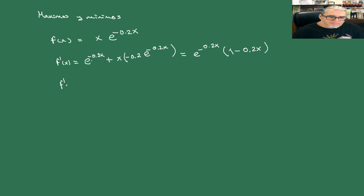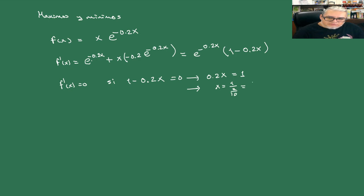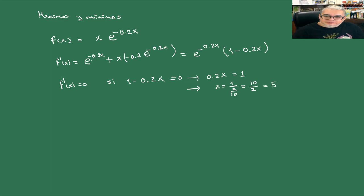f'(x) = 0 si 1 − 0.2x = 0, es decir que 0.2x = 1, o bien que x = 1 sobre 0.2, que es 10 sobre 2, que es exactamente 5.